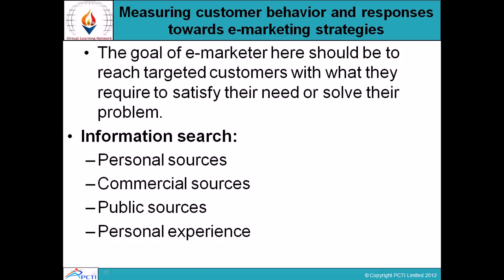Next is informational search. Informational sources comprise: first, personal sources — how we can search for information for a particular customer, such as a customer's favorite website; commercial sources — which newspapers and books to use and which customers have shown interest in; public sources — for example, certain regulatory and advisory sites; and personal experiences — for example, a customer may have tried an online transaction several times that failed, leading to a bitter experience.